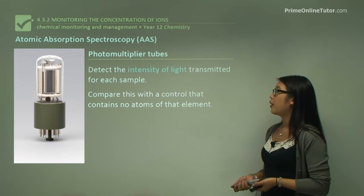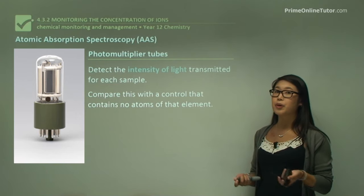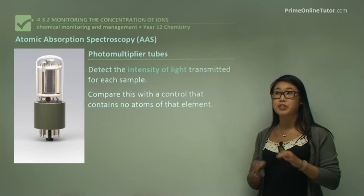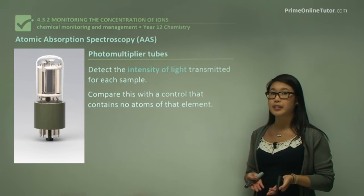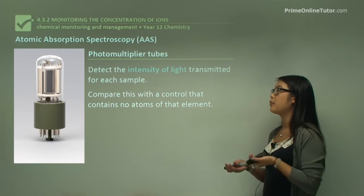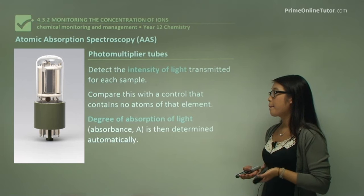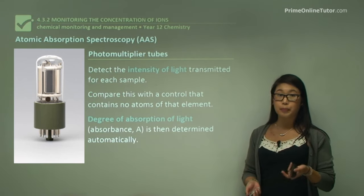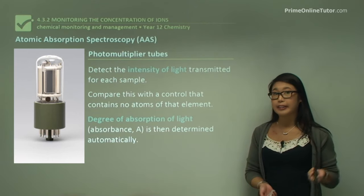We can then compare this to a control. A control will have no atoms of the element we're looking for, which gives a readout of zero. When we put in the sample with the ions we're looking for, we get the difference between the two. The degree of absorption of light, denoted as A, is then determined automatically.